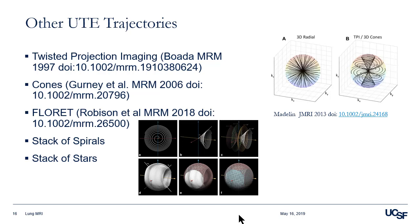You do have options within both UTE and ZTE pulse sequence trajectories. I've shown examples of both radial and cones or twisted projection imaging type sequences. There's nice recent work from Jim Pipe and Ryan Robeson using the floret trajectory, which is a cool option. You can also get quite good imaging results with stack of spirals or stack of stars trajectories done in a center-out fashion.